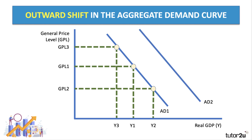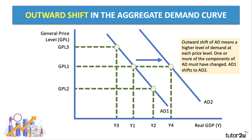Here we see an outward shift in the aggregate demand curve from AD1 to AD2. There's been an increase in aggregate demand, meaning a higher level of demand for goods and services at each general price level. At GPL1, demand has gone up from Y1 to Y4. Something in the macroeconomy is lifting total demand, meaning one or more of the components — C plus I plus G plus X minus M — must have changed.